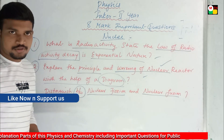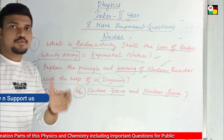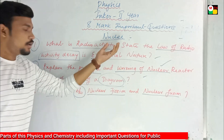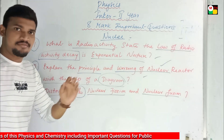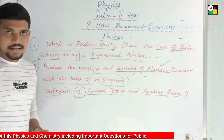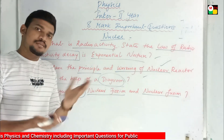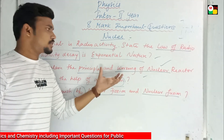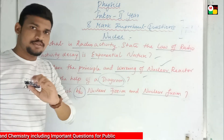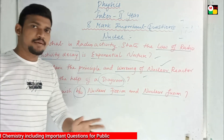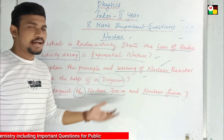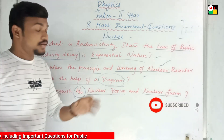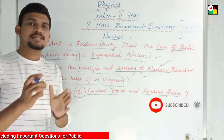So these are the 3 important questions from each chapter. From Waves I have given 3, from Nuclear I have given 3, and from Current Electricity I have given 3 — a total of 9 questions. If you go through these 9 questions, you can score 8 plus 8, which equals 16 marks. We have covered 8 important questions about physics in the second year.